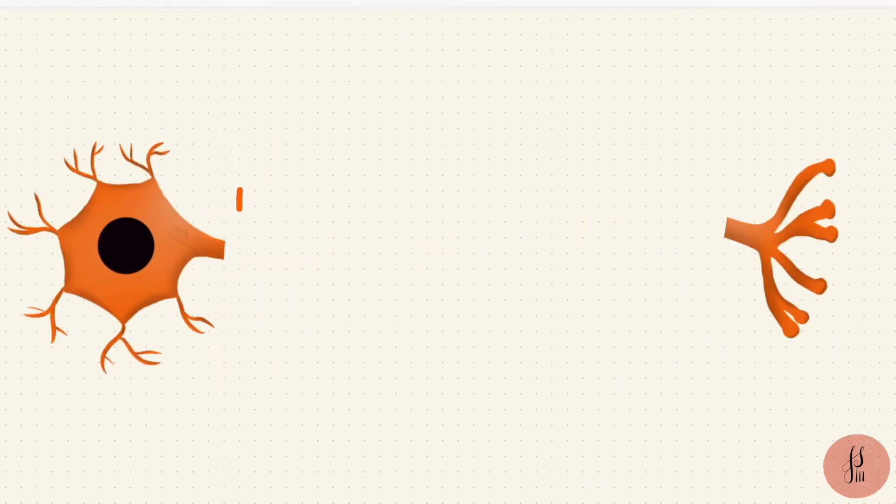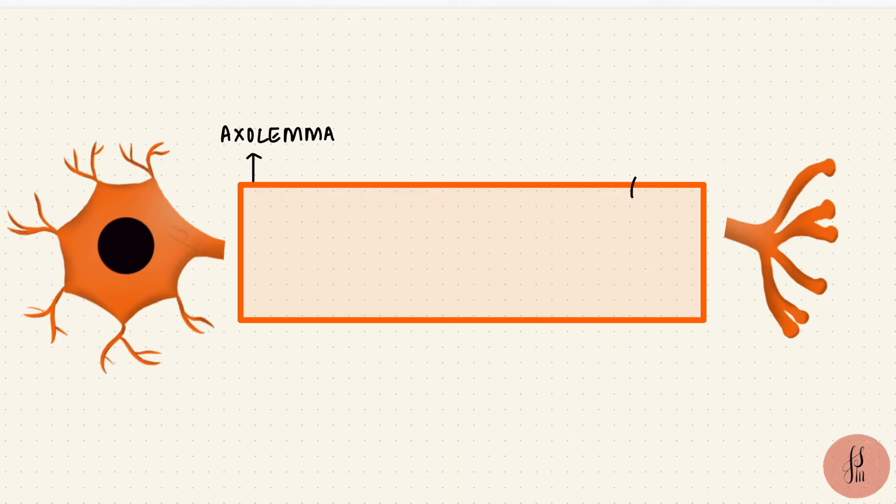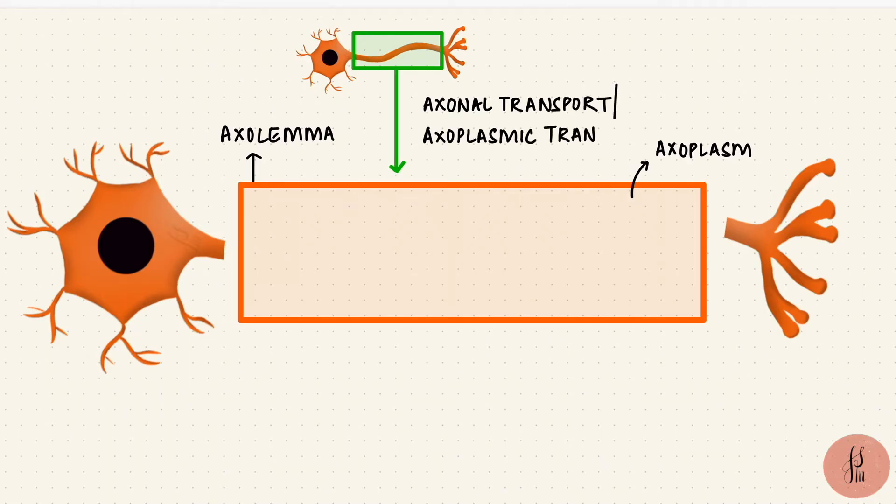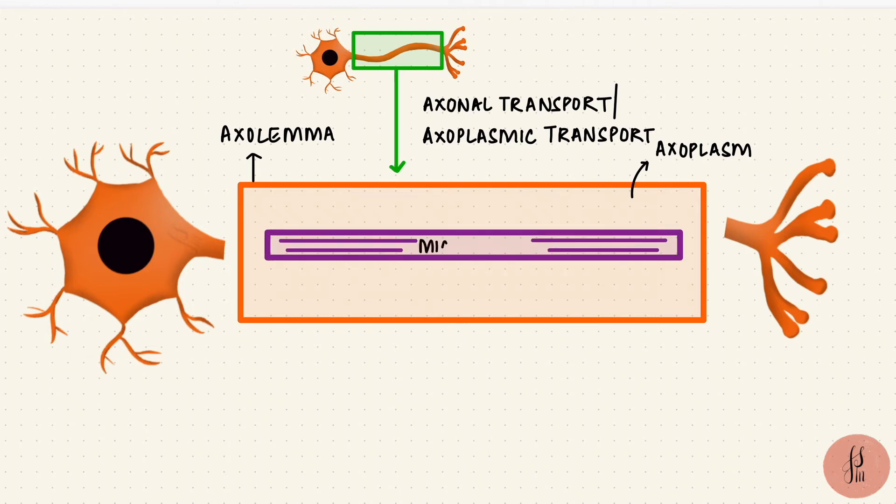Now I'm going to remove the axon, so that I can draw a schematic, magnified version of it to understand how things get transported through the axon. The membrane around it is called the axolemma. The cytoplasm of the axon is called the axoplasm. So this transport in the axon is called axonal transport, or axoplasmic transport, or axoplasmic flow. And they use microtubules, which form something like a track on which things move in either direction.